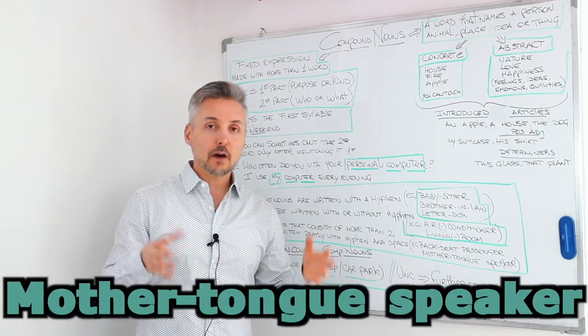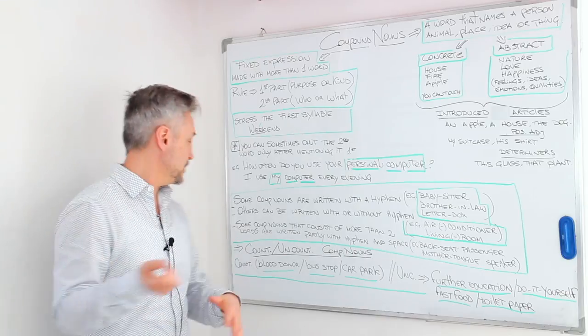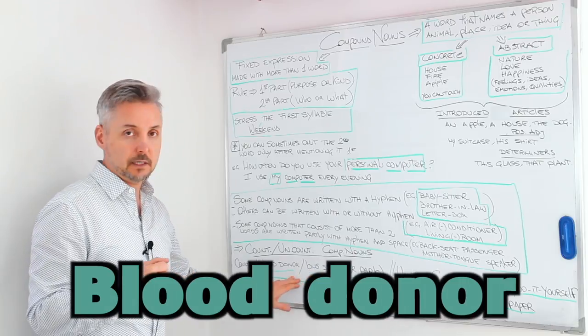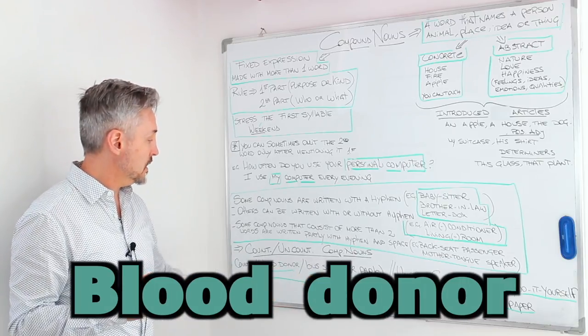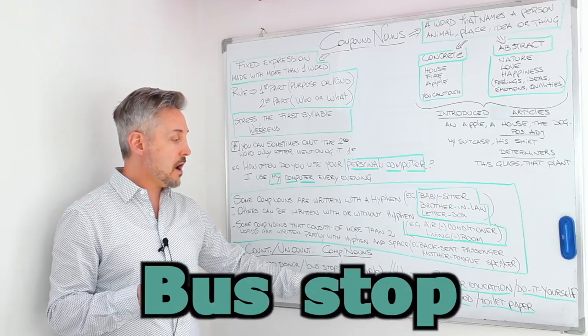Now, obviously, compound nouns can be countable and uncountable. And I listed some countable ones. Blood donor. Here we don't need a hyphen. Bus stop. Car park.